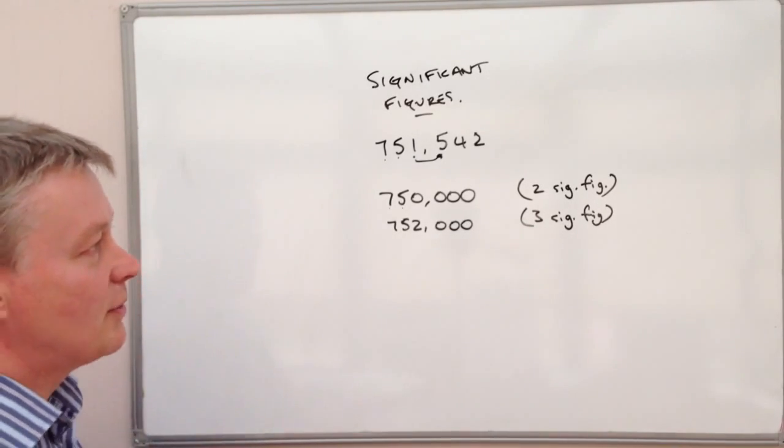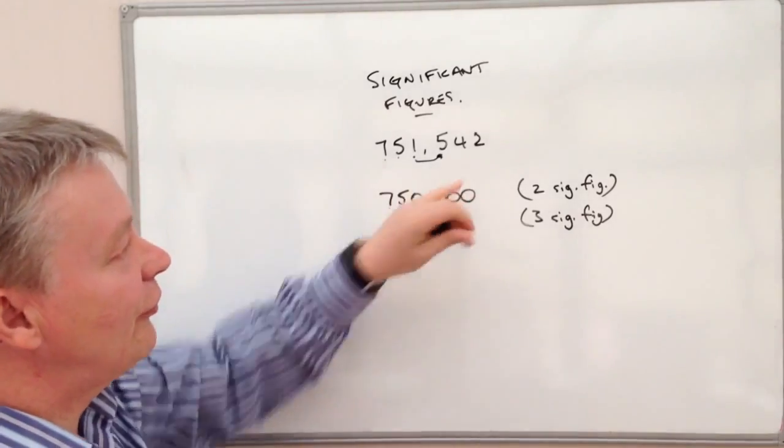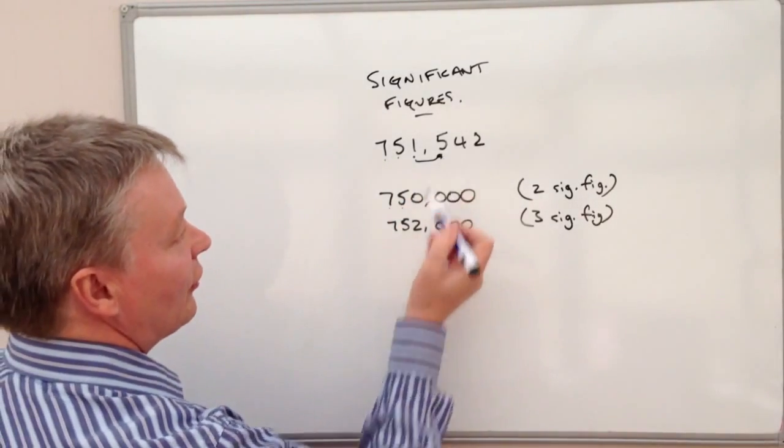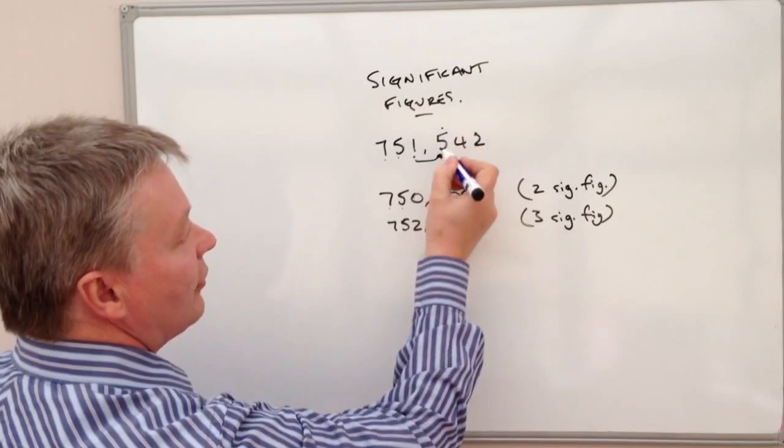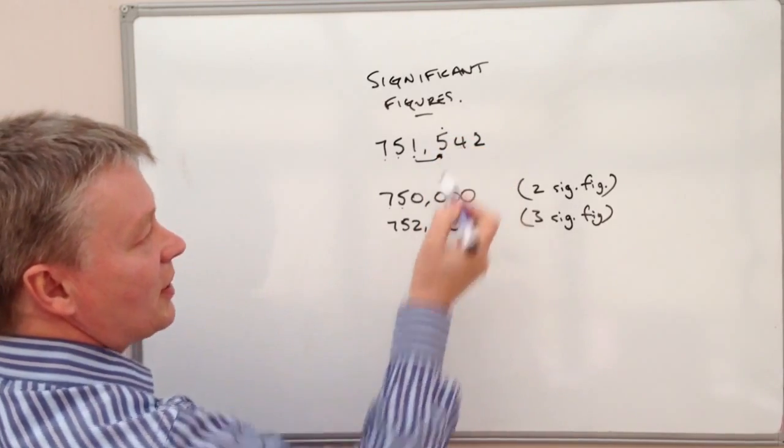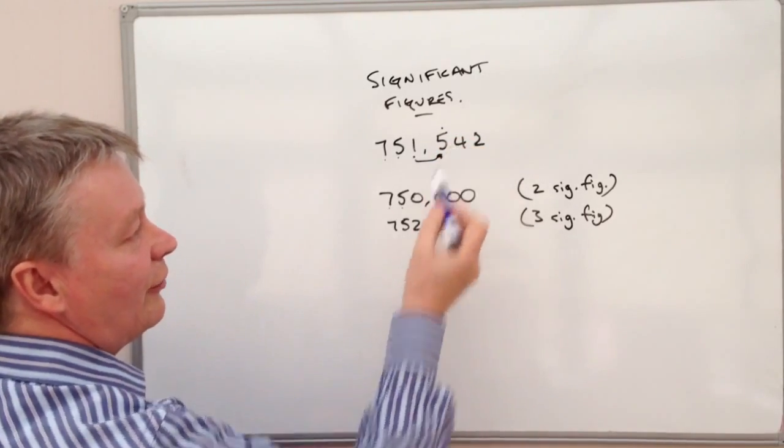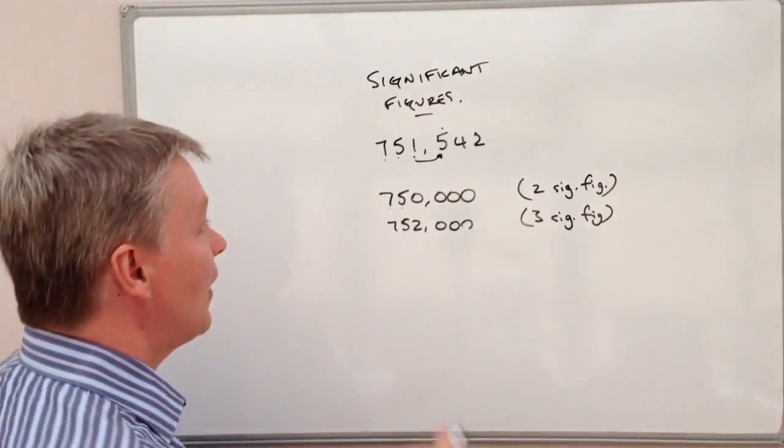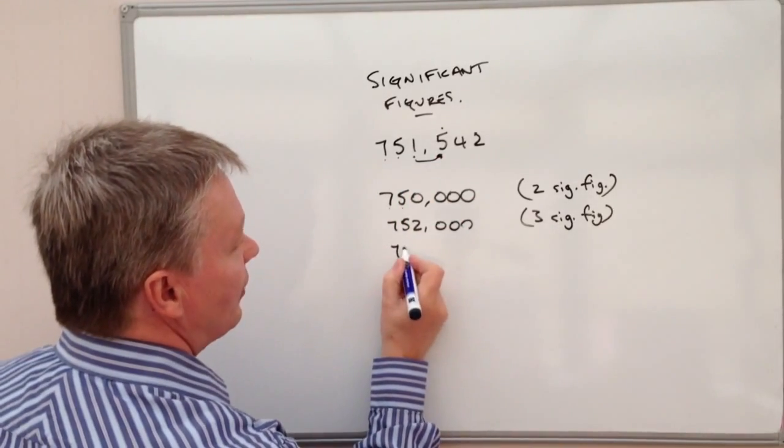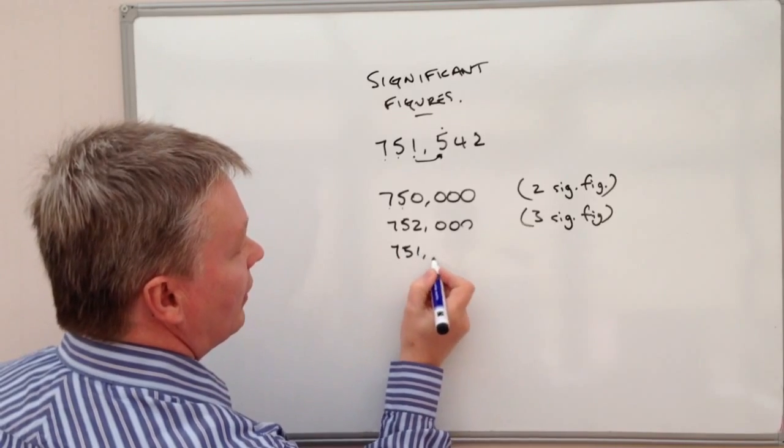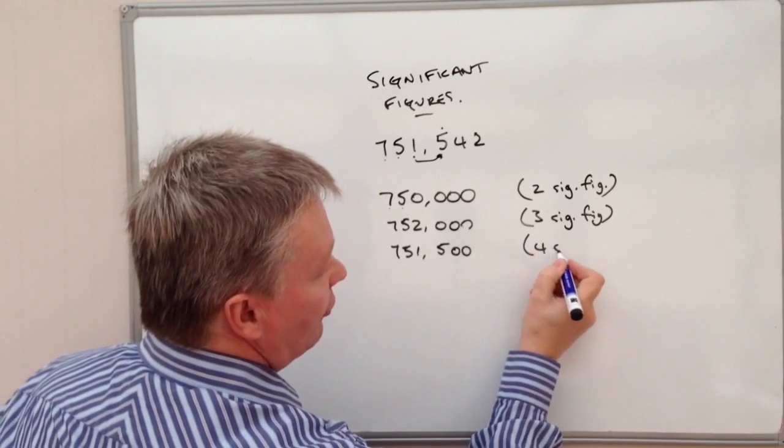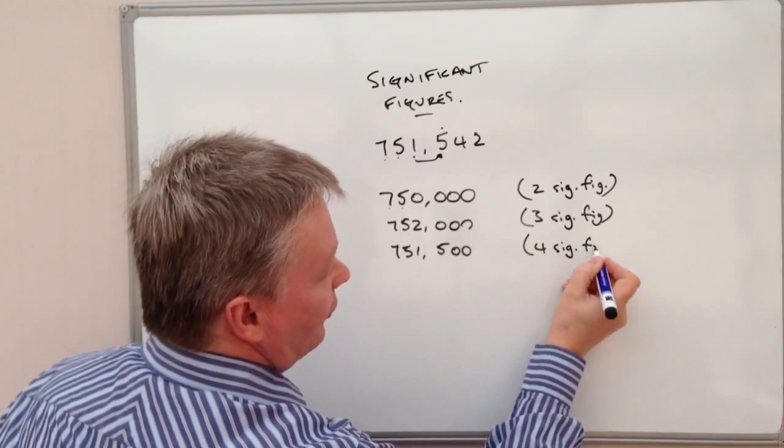So that's the other thing really to be aware of. If I did this to four significant figures, then again, I look at the fourth. So the fourth is five. The next number behind it is a four. So in other words, that five stays the same. So it would be 751,500. And that's to four significant figures.